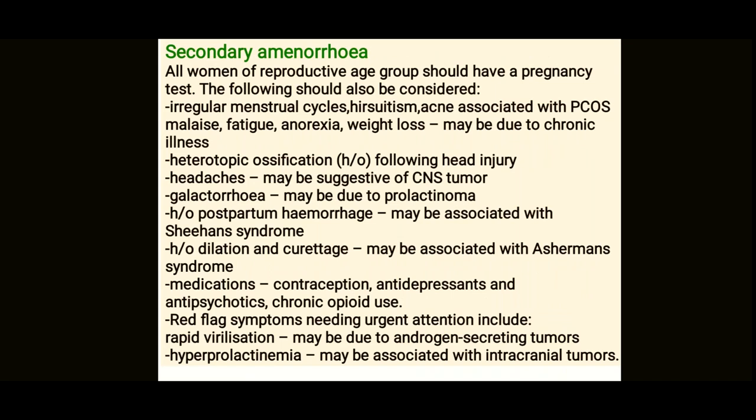In secondary amenorrhea, ask whether her periods were regular before. Ask about hirsutism and acne, which may be associated with PCOS; malaise, fatigue, anorexia, and weight loss may suggest chronic illness. Ask about headache suggestive of pituitary tumors, galactorrhea, postpartum hemorrhage to rule out Sheehan's syndrome, and history of dilatation and curettage to rule out Asherman's syndrome. Also ask about medications — contraceptives, antidepressants, antipsychotics, and opiates. Ask about red flags like rapid virilization, which may indicate an androgen-secreting tumor.